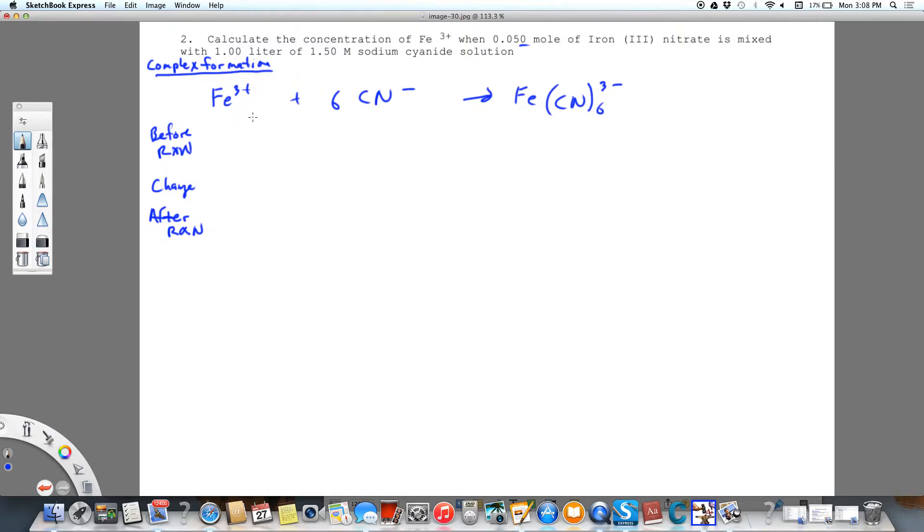So before, it's 0.050, and the sixth cyanide is going to be 1.50. Because sodium cyanide is NaCN, we're not going to multiply that by six, but we will multiply something by six. And so our complex is zero.